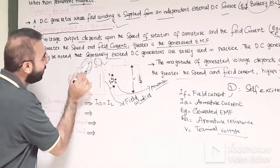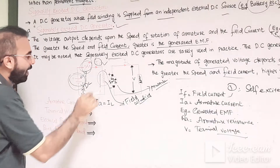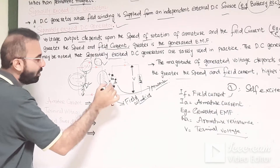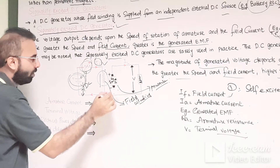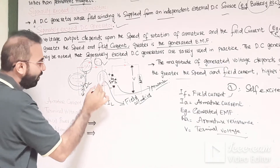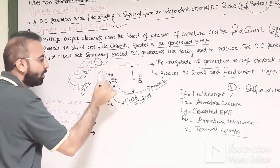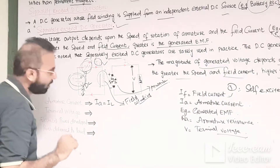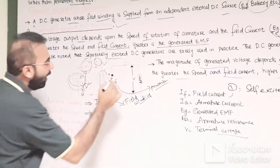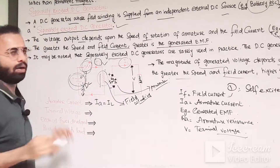If we decrease the resistance, the field current will increase, more MMF is produced in the field winding, the magnetic flux will increase, and the magnetic field will be strengthened. The armature is already being driven by the external prime mover. The lines of flux cutting take place between the field winding and the rotating armature, and the generated EMF is produced in the armature according to Faraday's law of electromagnetic induction — whenever the flux linking with a coil changes, an EMF is induced in the coil. This load current flows because of the load connected across the armature terminals.